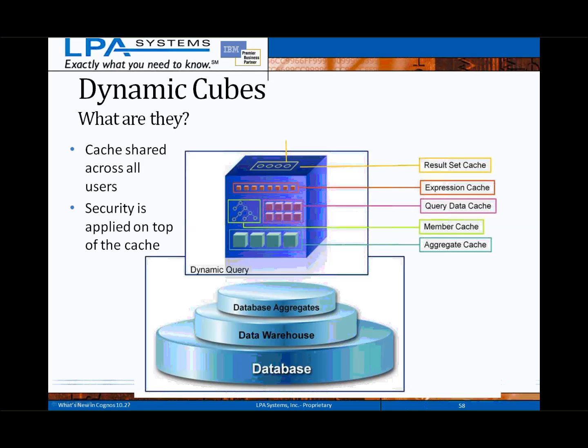Dynamic cubes leverage the extensive caching capabilities within the dynamic query mode engine to efficiently store different data types and types of results within memory. Separate caches for dimensions and numbers, as well as queries, expressions, and results, combined with configurable in-memory aggregate caching, provides a powerful analytic platform. The data is shared by all users, and security rules defined within the cube are also applied to the cache, just like any other data source.